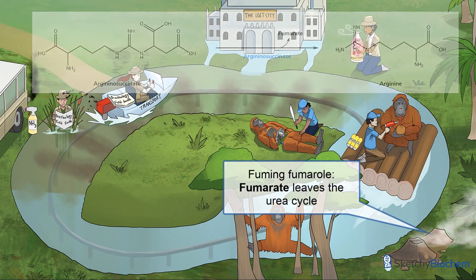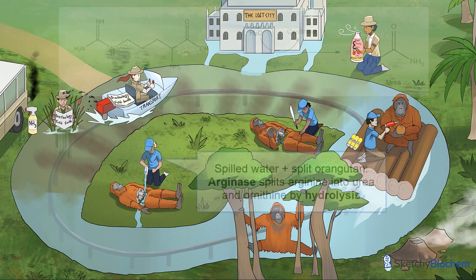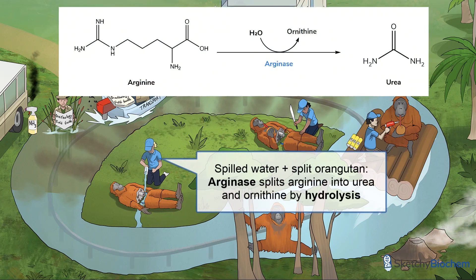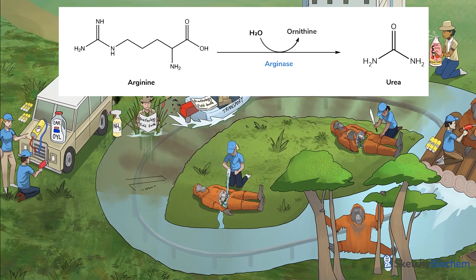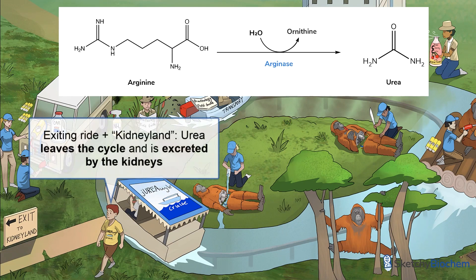A moment of silence. And we're back, just in time for our last step. Another park worker is seen spilling water dripping between two halves of a dismembered orangutan robot — he's arginase, which hydrolyzes arginine into urea and ornithine. This kid wearing a Juryungle crew shirt leaving the ride is urea, the final product that gets excreted by the kidney. Ornithine just goes back into the cycle to hook up with another carbamoyl phosphate, and the cycle repeats.